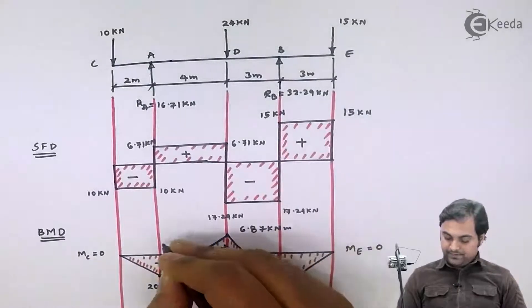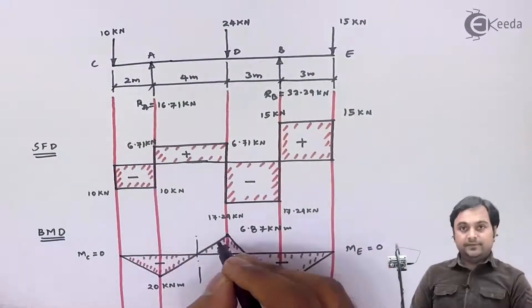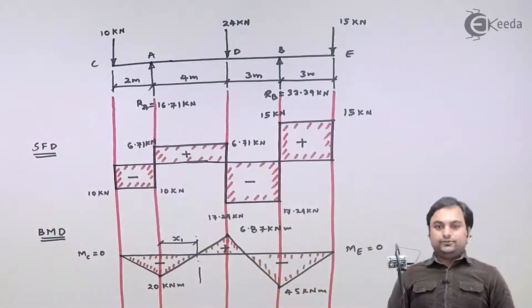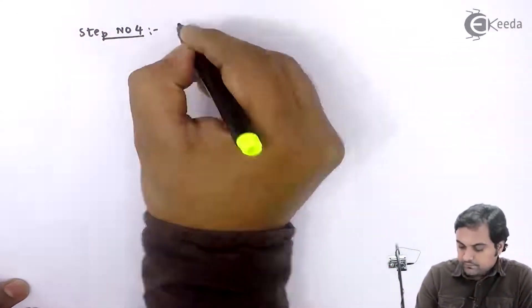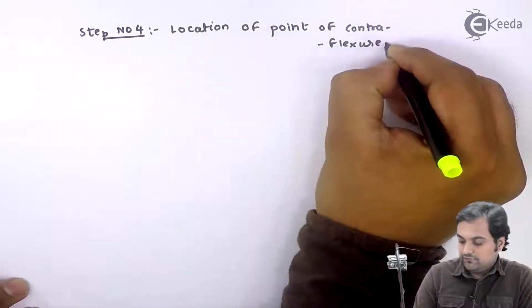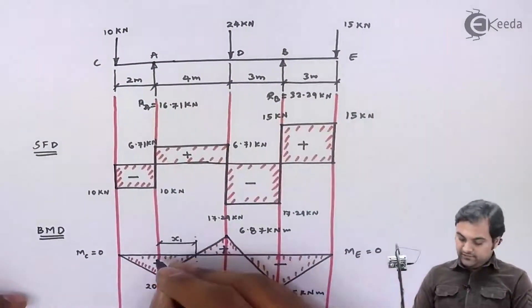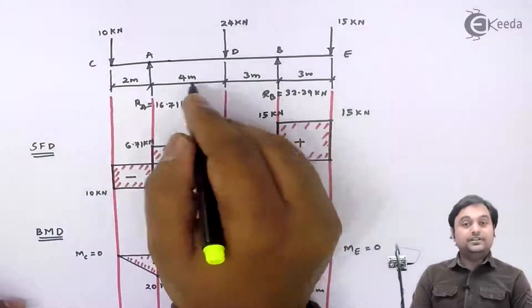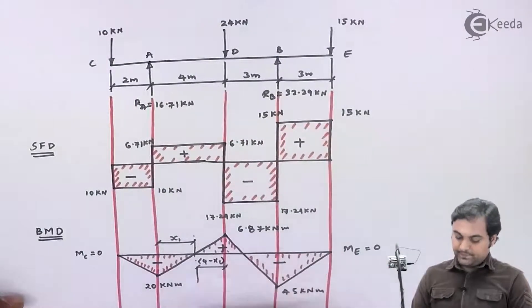I will start with the first point where the bending moment is changing its sign. I will call this distance x1. This is Step 4: location of point of contraflexure. For that, I will draw two similar triangles — the first triangle having base x1, and the other with base (4 minus x1), since 4 meters is the total length and x1 is taken from point A.